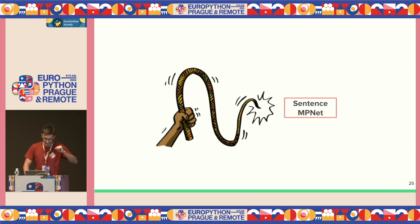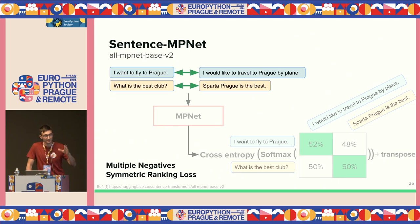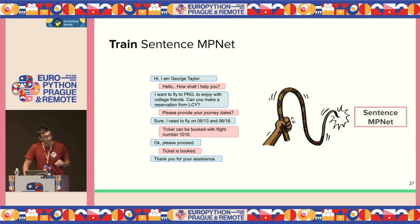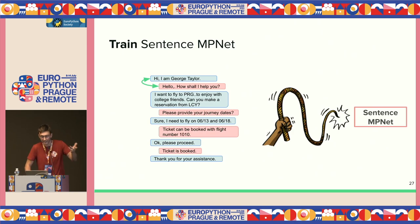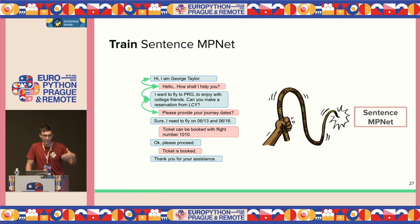Let's train the Sentence MPNet. We can follow the Multiple Negative Symmetric Ranking Loss pattern — we need pairs of semantically similar text. Looking at the dialogues, the consecutive turns should be related because one is a reaction to the other, like question-and-answer pairs. 'Hey, I'm George' is related to 'Hello, how shall I help you?' — it follows as part of the conversation. Training the model this way, we're defining our own similarity function, which I find quite cool.